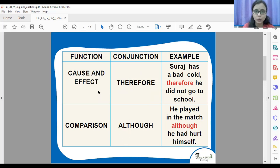Next. Therefore, although. Therefore is used to show cause and effect. It indicates cause and effect. Something is caused because of something and something is affected because of something. It is shown in the sentence by using therefore. Suraj has a bad cold. Therefore, he did not go to the school. So what is the effect of bad cold? He did not go to the school.